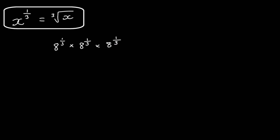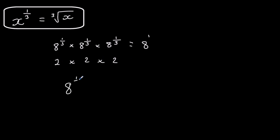A power of a third means cube root. In this case I've got eight to the power of a third, multiplied by eight to the power of a third, multiplied by eight to the power of a third. If we add the powers, a third plus a third plus a third makes a whole. I've got three numbers multiplied by themselves that make eight — that's two times two times two — so eight to the power of a third must equal two. The rule is: anything to the power of a third is a cube root.